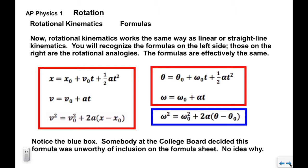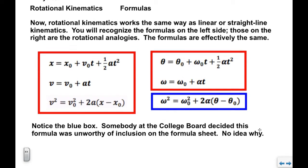Rotational kinematics works the same way as linear kinematics — you'll recognize the formulas. The linear formulas on the left transfer to rotational ones on the right by replacing x with θ, x₀ with θ₀, v with ω, and a with α. The formulas work exactly the same way, except wherever you had meters you now have radians. Note that ω² = ω₀² + 2α(θ − θ₀) is not on the formula sheet but follows directly from the linear analog by substituting the rotational variables.